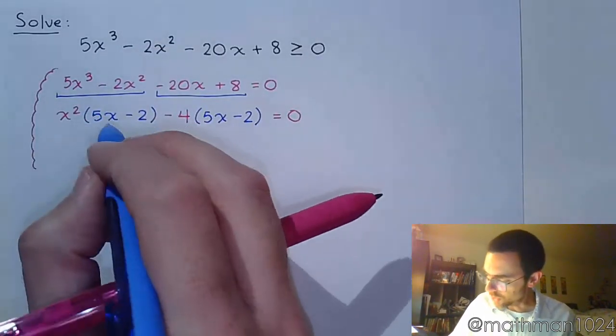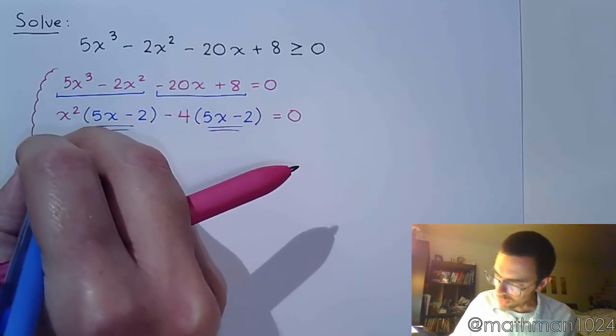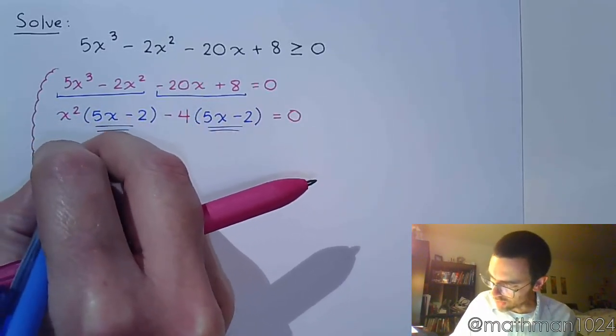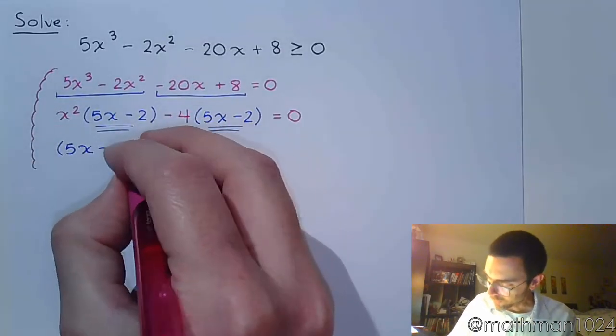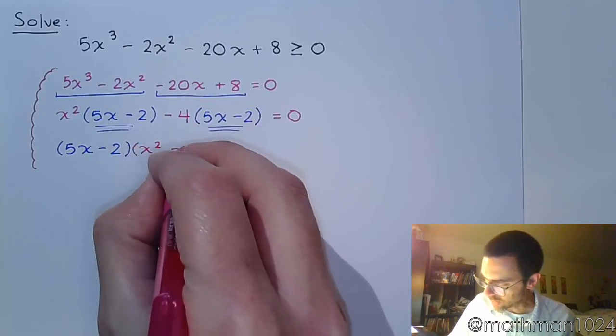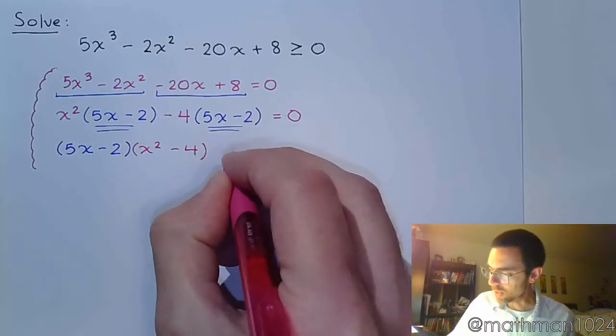So we see that we do get to finish factoring this guy by grouping, because these factors are exactly the same. So 5x - 2 times x² - 4.